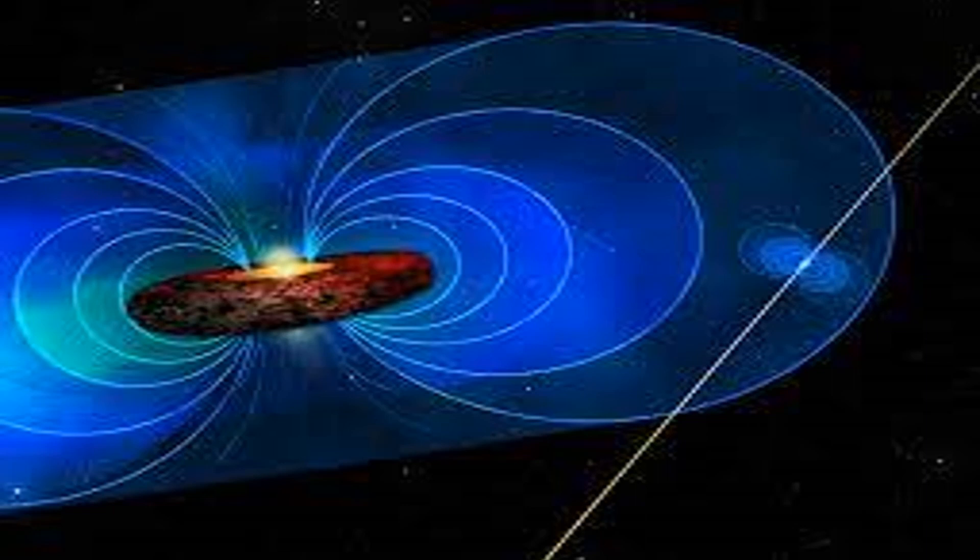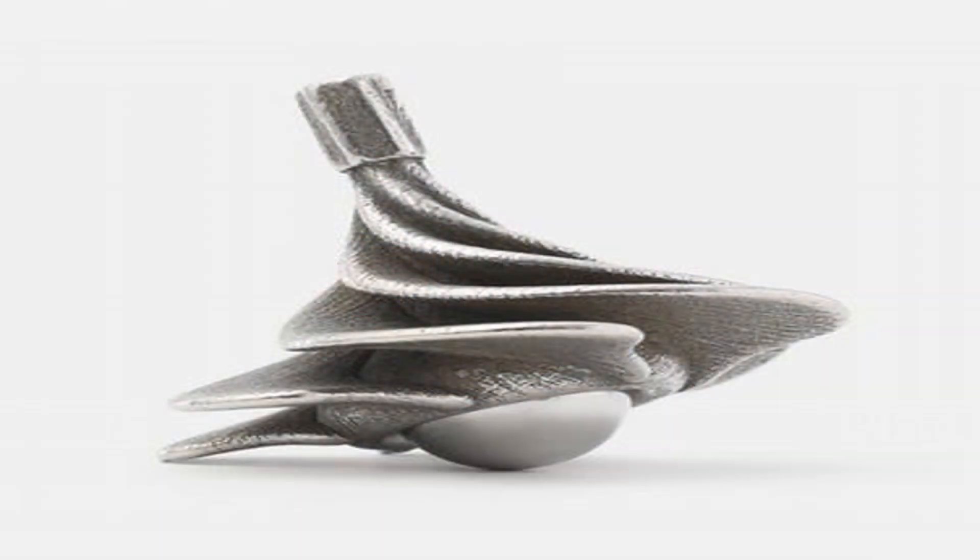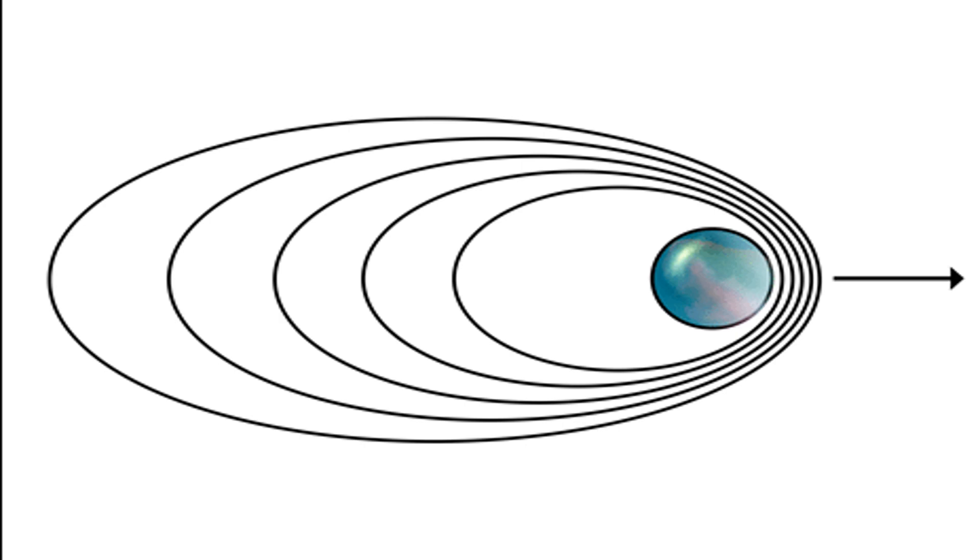The main consequence of the gravitomagnetic field is that a moving object near a massive, known axis-symmetric rotating object will experience acceleration not predicted by purely Newtonian gravity, exactly how a moving charge near a charged, known axis-symmetric rotating object experiences acceleration.